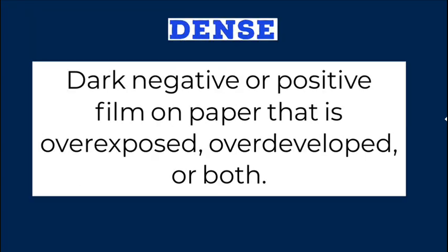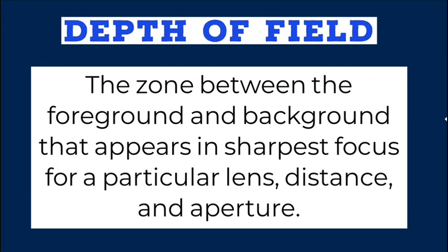Dense: a dark negative or positive film on paper that is overexposed, overdeveloped, or both. Depth of field: the zone between the foreground and background that appears in sharpest focus for a particular lens, distance, and aperture.